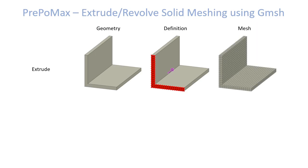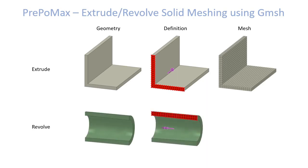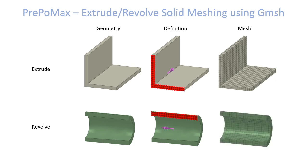A similar procedure can be used for revolved geometries. First, the base surface used for the revolved geometry must be selected by the user. PrePoMax will recognize the axis of revolution and the angle of revolution. The user sets up the meshing properties for the base surface, and after meshing a hexahedral mesh can again be obtained. This concludes the presentation of new meshing capabilities of PrePoMax.